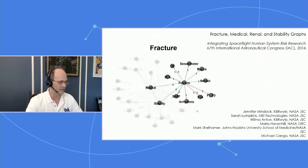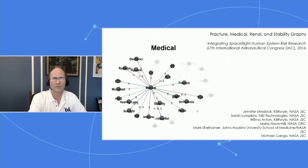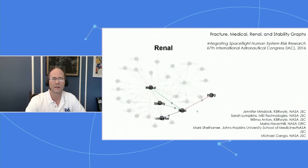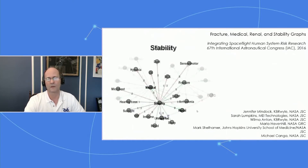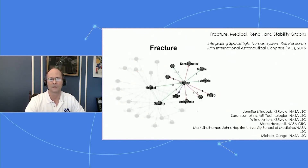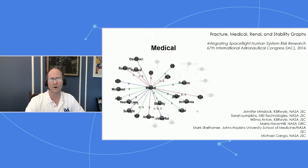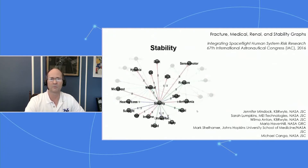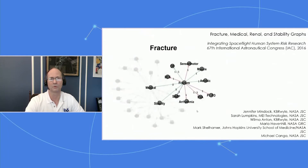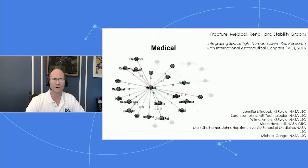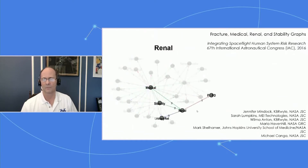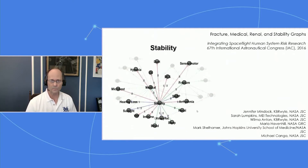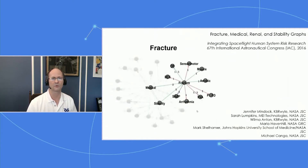This is a data set I've been working on with folks at Johnson Space Center in the Human Systems Risk Program. They are trying to understand the interrelatedness of various risks of long-duration human space flight. This particular data set is from a 2016 presentation by some former colleagues on the various relationships of these risks and different groupings.